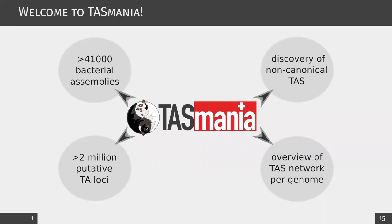In this presentation you will hear about Tasmania, a web interface that compiles more than 2 million putative toxin-antitoxin loci from more than 41,000 bacterial genomic assemblies. It allows the discovery of non-canonical TAS and supports your experimental design by defining the TAS network in your favorite genome.